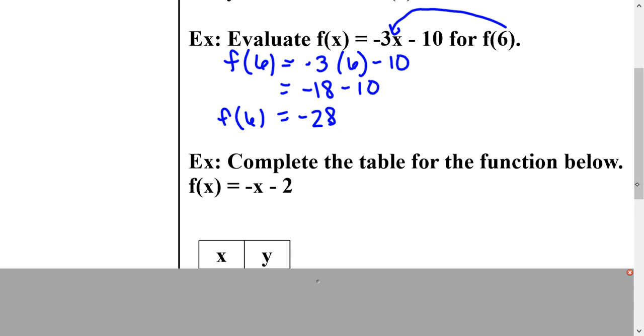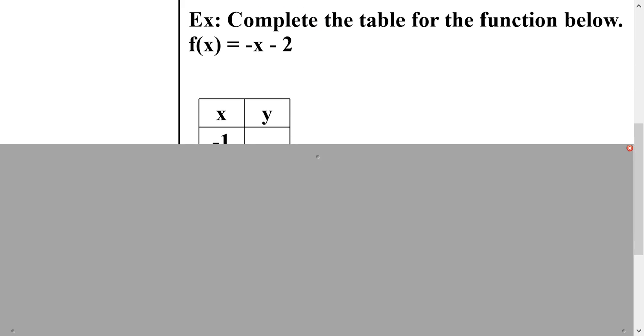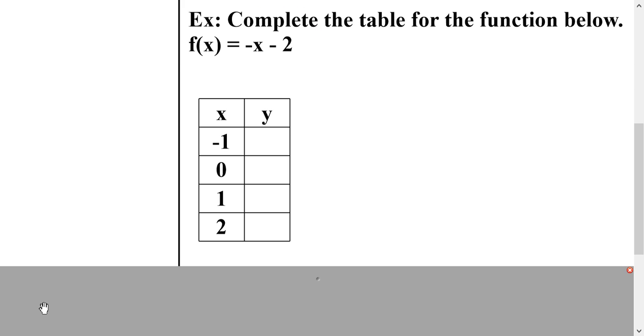So now we're going to learn how to complete a table for a function. So it says complete the table for the function below. And our equation, our function, is f(x) = -x - 2. So if I look, my first value of x that they want me to find is -1.